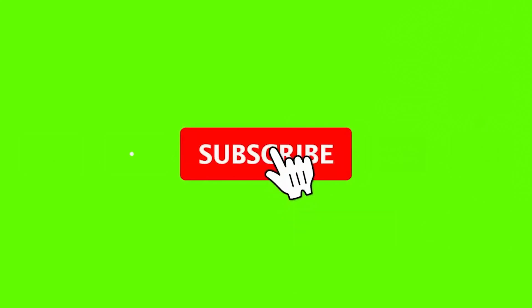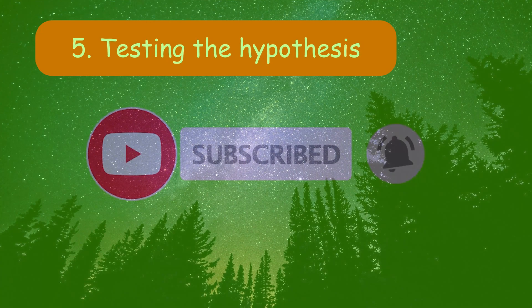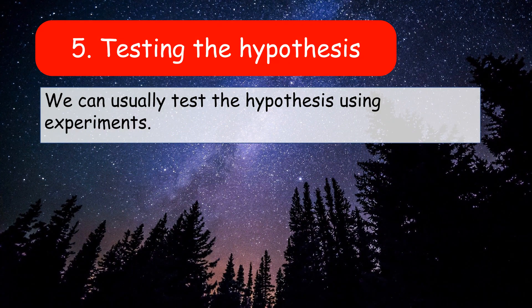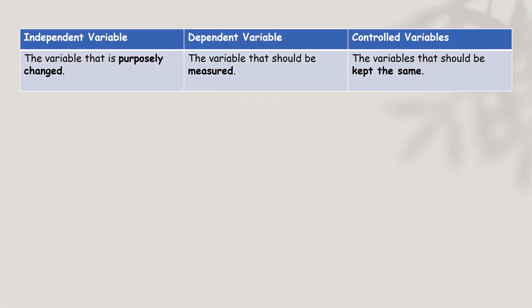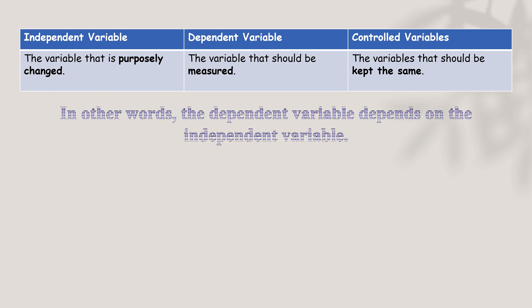Step number five: testing the hypothesis. This is the main part of the video on how to conduct a fair experiment. We can usually test the hypothesis by using experiments. To test the hypothesis, we will have to study its independent variable, dependent variable, and controlled variables. The independent variable is the variable that is purposely changed. The dependent variable is the variable that should be measured, while controlled variables are the variables that should be kept the same. In other words, the dependent variable depends on the independent variable.